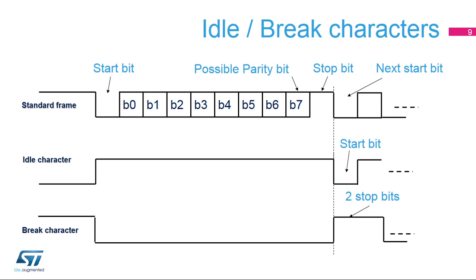The previous slide described a standard frame. This slide shows an example of an 8-bit data frame configured with one stop bit. An idle character is interpreted as an entire frame of ones. The number of ones will include the number of stop bits as well. A break character is interpreted as receiving all zeros for a frame period. At the end of the break frame, two stop bits are inserted.